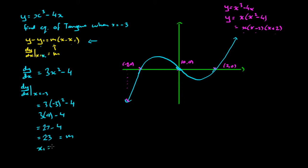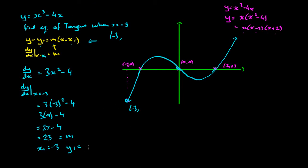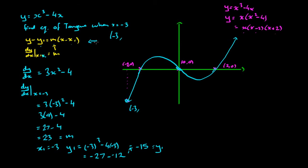Our x1 value is negative 3 from the coordinate. But we don't know y1 yet, so x1 equals negative 3. We need to plug x equals negative 3 into our function: y1 equals (−3)³ take 4 times (−3), that's equal to negative 27 take negative 12, which equals negative 15. So y1 equals negative 15.